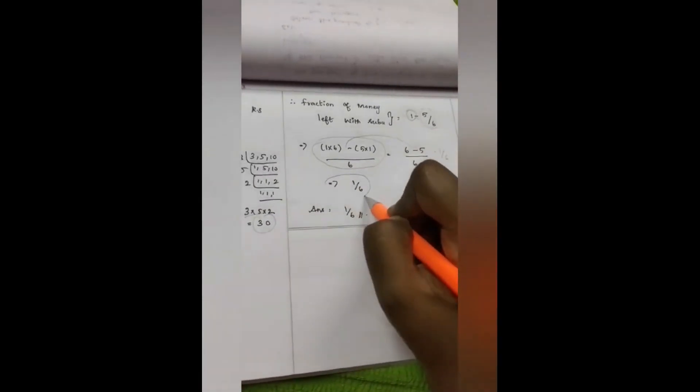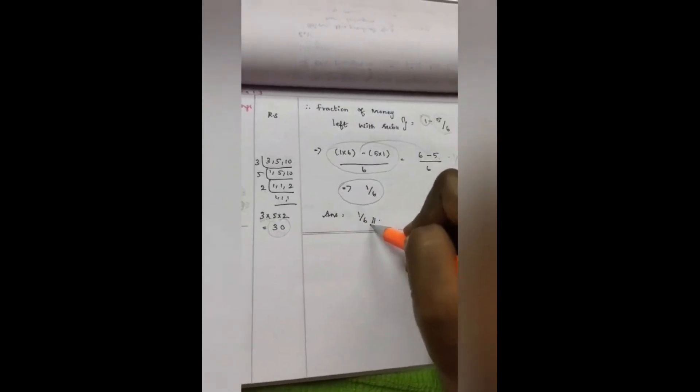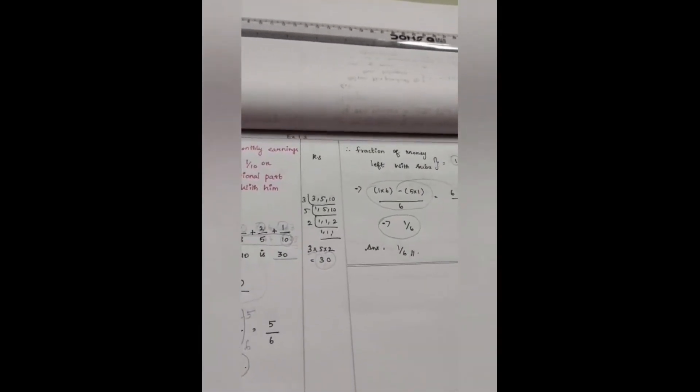Therefore, he had left 1 by 6 part, the fractional part of money left for other expenses.